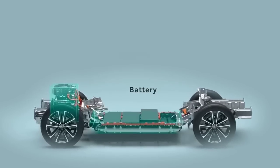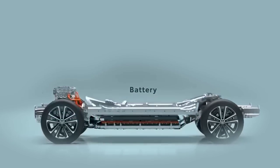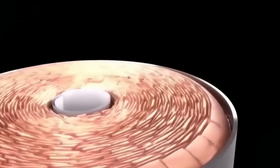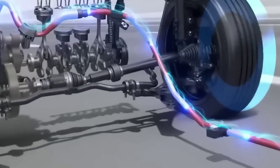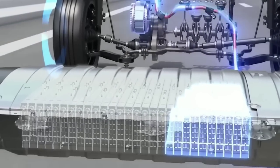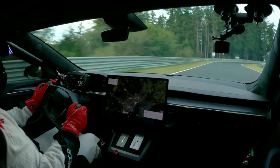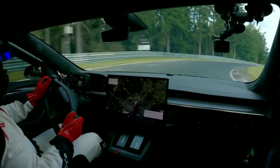The scientists also tested their battery under different environmental conditions, such as temperature, humidity, and air pressure. They found that their battery was robust and adaptable to various scenarios, such as hot and cold climates, dry and humid atmospheres, and high and low altitudes. This is important for practical applications, since electric vehicles need to operate in diverse environments around the world.